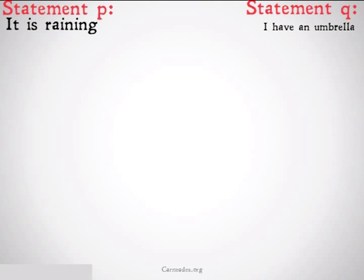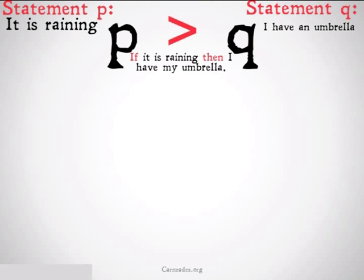Now, statement P: it is raining. Statement Q: I have an umbrella. If it is raining, then I have my umbrella. P implies Q is how we're going to write that.